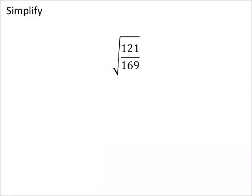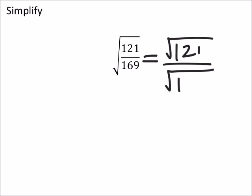All right, simplify these. So these ones aren't too bad. All we're going to do is split this up. Let me take the square root of the numerator and the denominator, so I got 121 over 169.